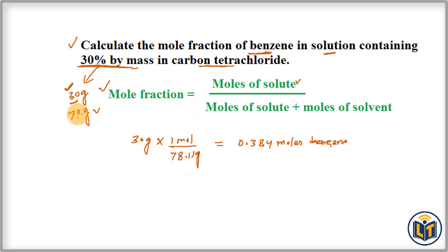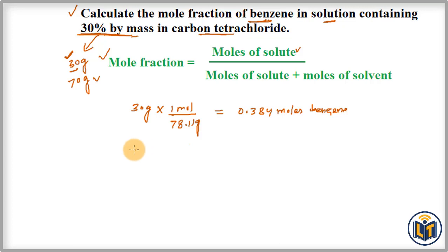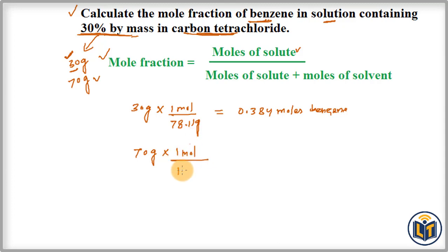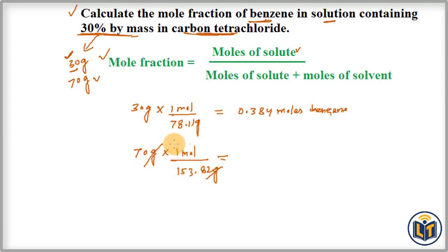Next, in a similar manner, we convert the mass of carbon tetrachloride, which is the solvent, into moles. Here we have 70 grams as the mass of the solvent. The molar mass of carbon tetrachloride is 153.82 grams per mole. You can directly divide the mass of a substance by its molar mass to get the number of moles.